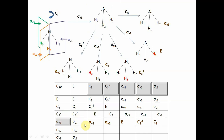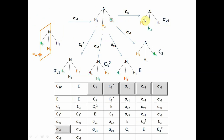For the fourth row, we first perform sigma V1 on the molecule — H1 stays in its own place and the two hydrogens are exchanged, giving the sigma V1 orientation. Then applying C3, we rotate the molecule and get sigma V1 orientation again. Sigma V1 followed by C3 generates C3; sigma V1 followed by sigma V2 generates identity; sigma V1 followed by sigma V3 generates C3²; and sigma V1 followed by C3² generates sigma V3. So this row is now filled.